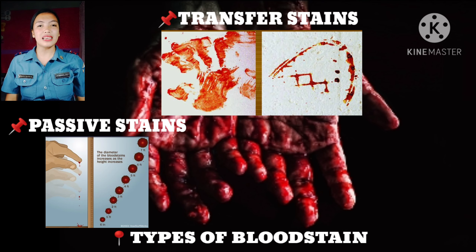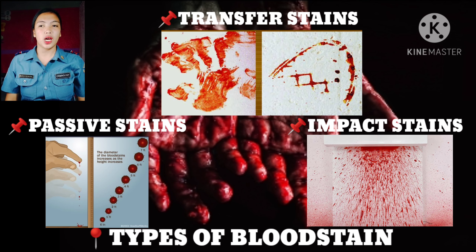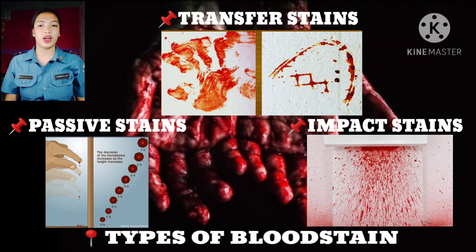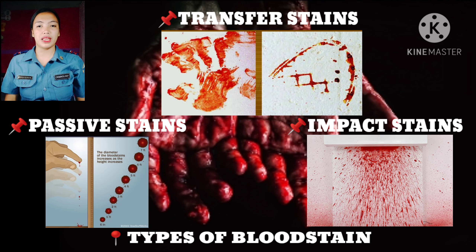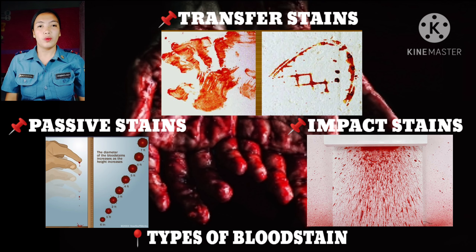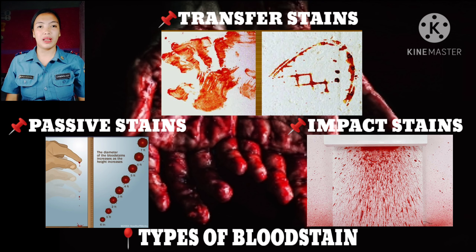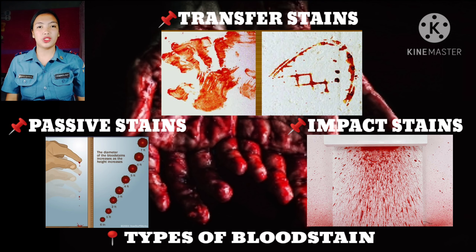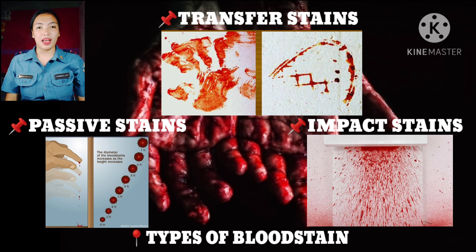And last is the impact stains. This is the result from blood projecting through the air and are usually seen as spatter. These are the usually visible blood spatter. For example, when a baseball bat comes into contact with blood, through the impact of the baseball bat, the blood splashes and that becomes the spatter.